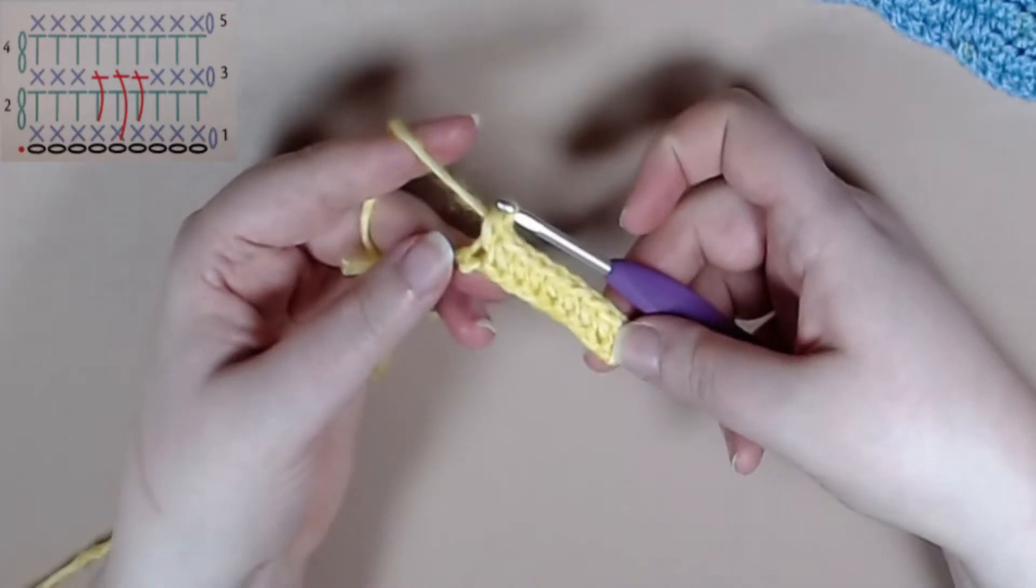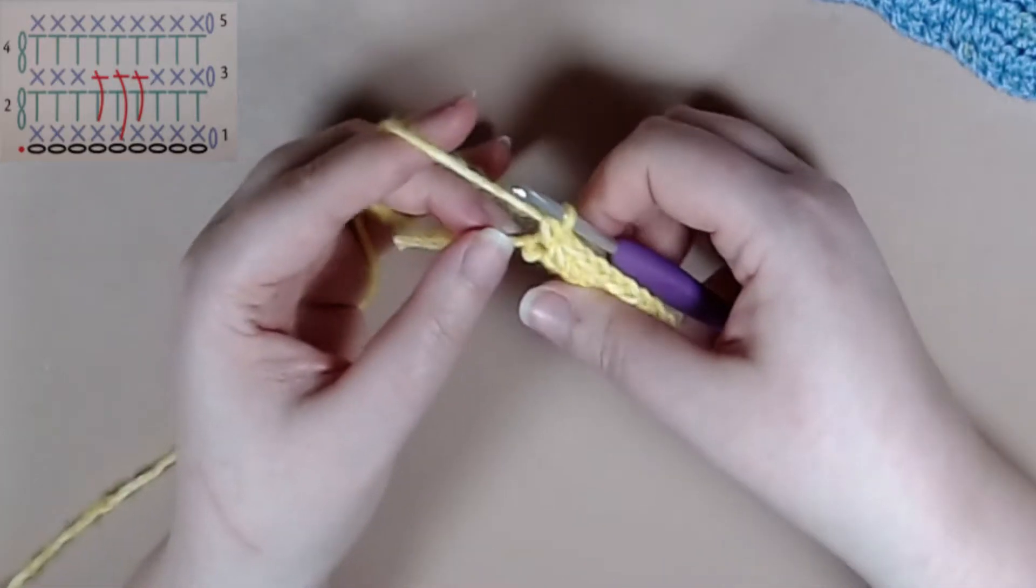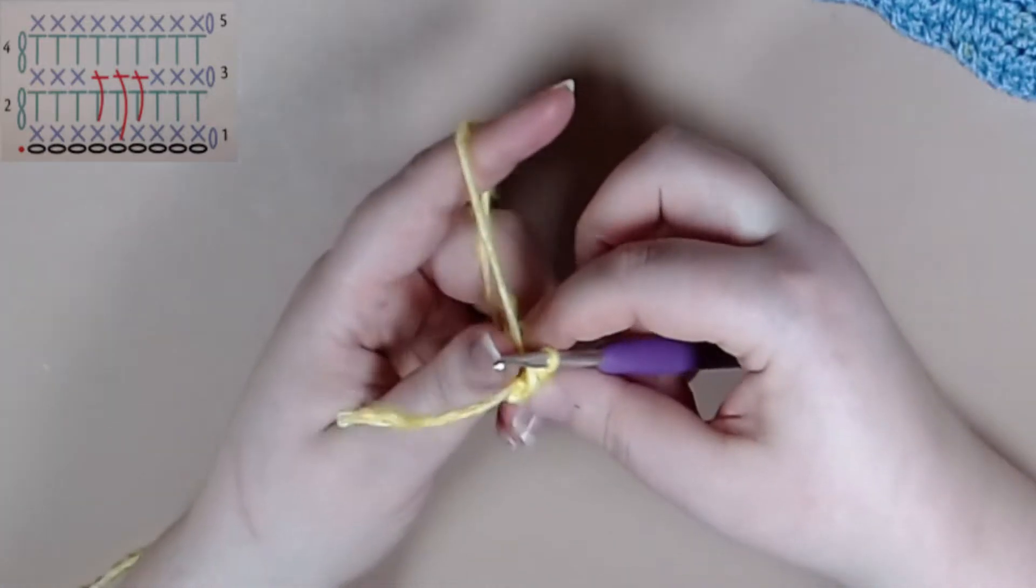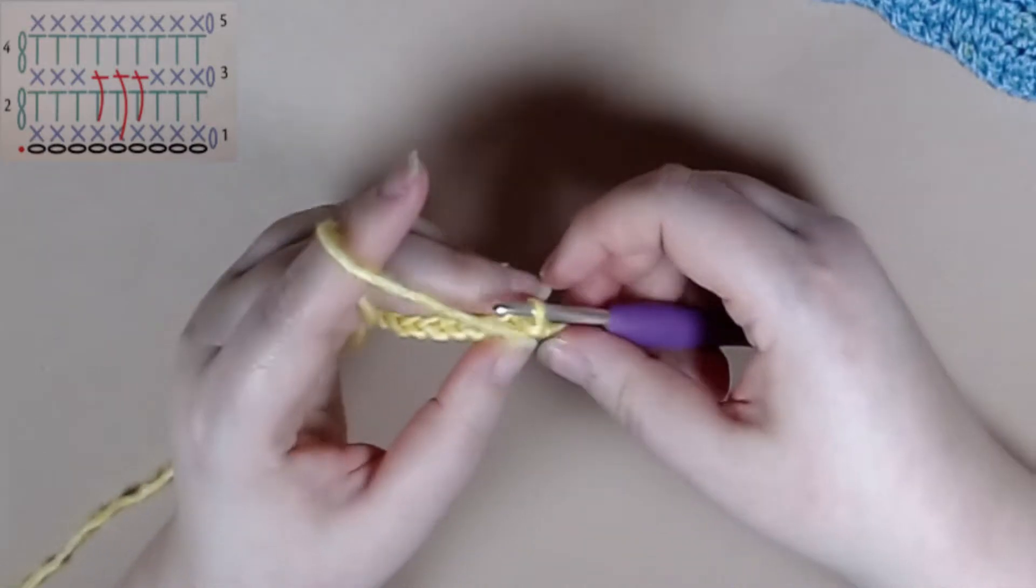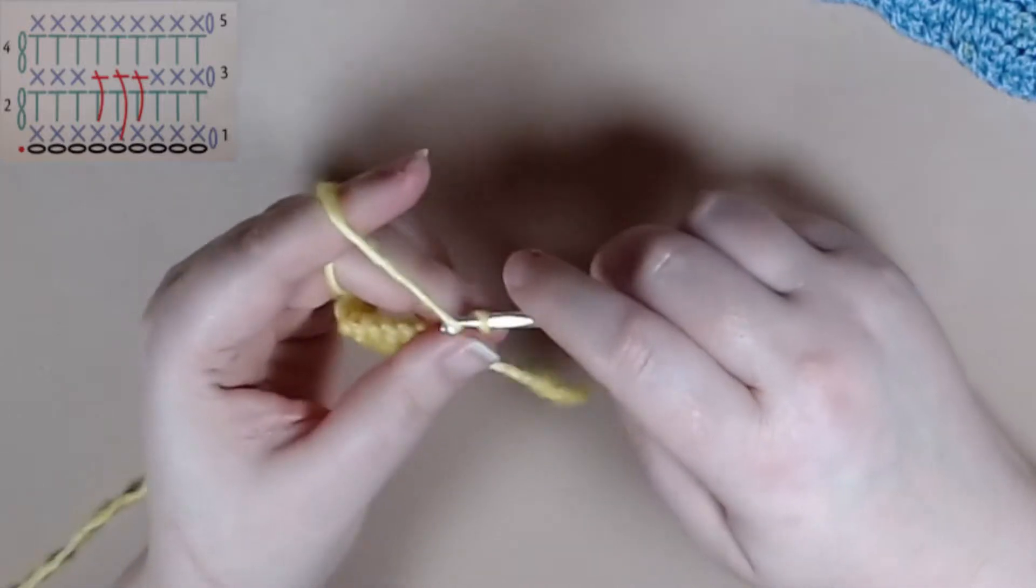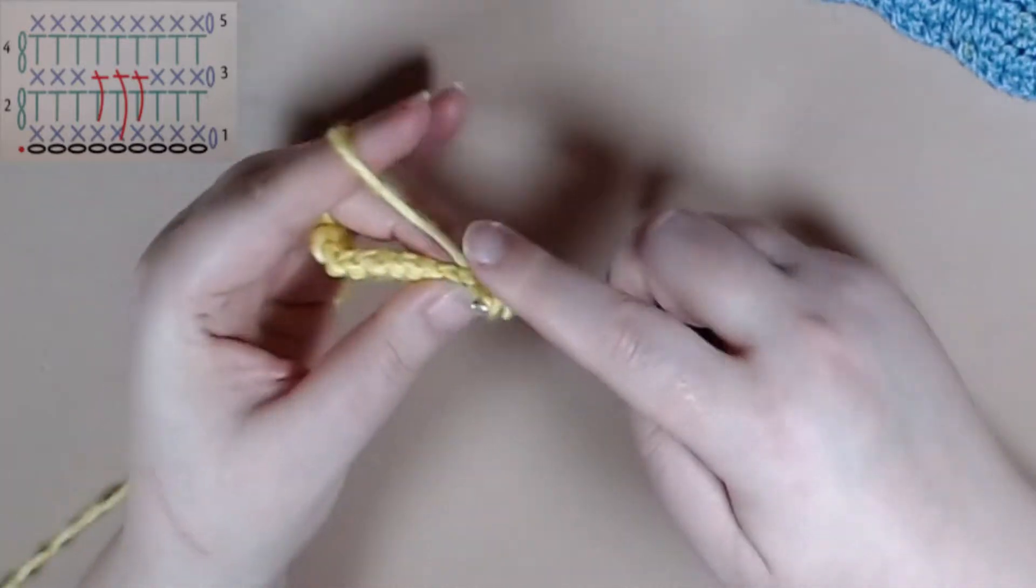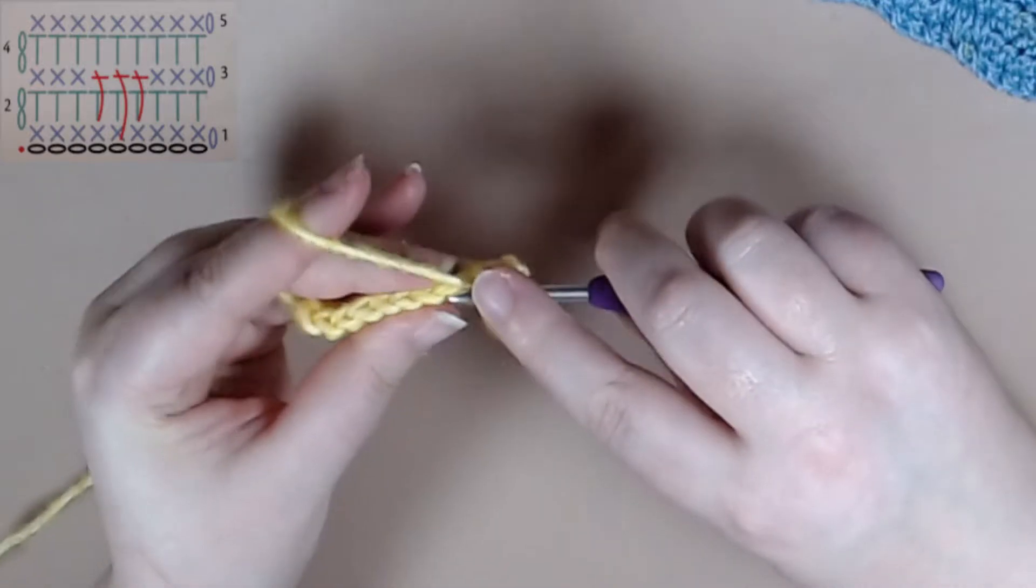And that finishes Row 1. So Row 2 we are going to turn our work, we are going to chain two and we are going to work a half treble crochet in the next stitch followed by half treble crochet all the way till the end of the row.